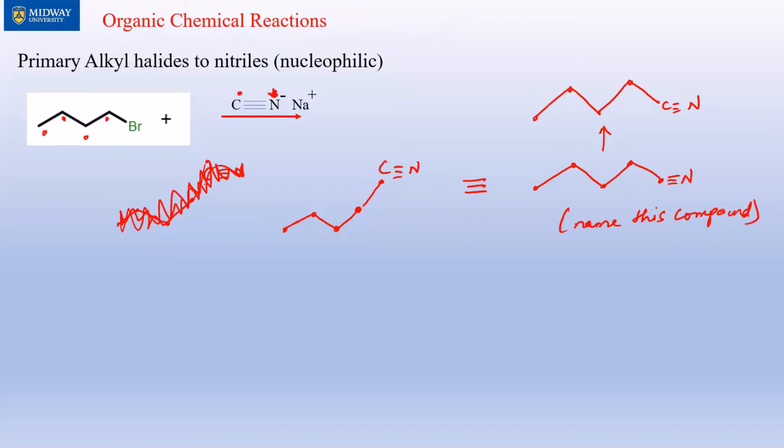So this is nucleophilic and this actually has the same mechanism. If you are interested in the mechanism, then this is the Br, the C triple bond N minus. The minus comes and attacks this carbon, and then in the process the Br gets kicked out. And that's how you end up with C triple bond N. That's how you end up with this product. This is the mechanism.